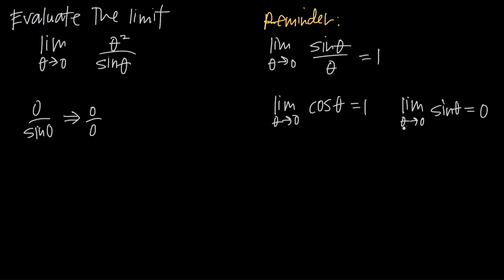Even if we know that the limit as theta approaches 0 of sine of theta equals 0, and we took the limit of the numerator and denominator separately, having 0 in the denominator wouldn't help us. But if we could manipulate this function so that it matched the first form — sine of theta divided by theta — maybe we could simplify it that way. That form is sine theta divided by theta, so we want to take the sine theta in the denominator and divide it by theta. If we do something to the denominator, we also have to do it to the numerator, so we multiply both by 1 over theta.